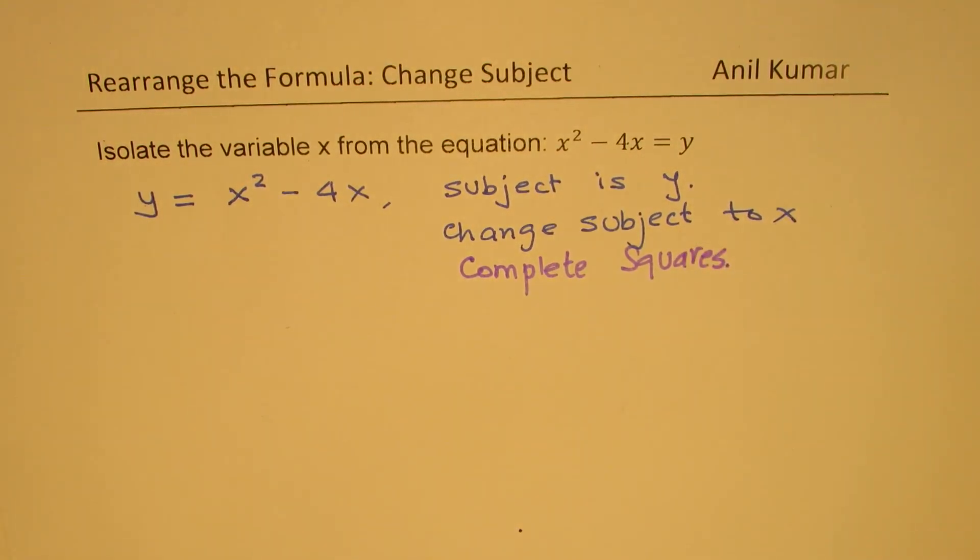Let's see how we complete squares and then change the subject when quadratic equations are involved as we have here in the example. To give you an idea of changing the subject for a quadratic equation, I hope you remember what is a plus b whole square equals to?